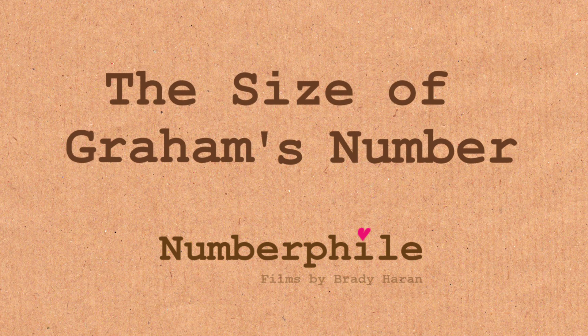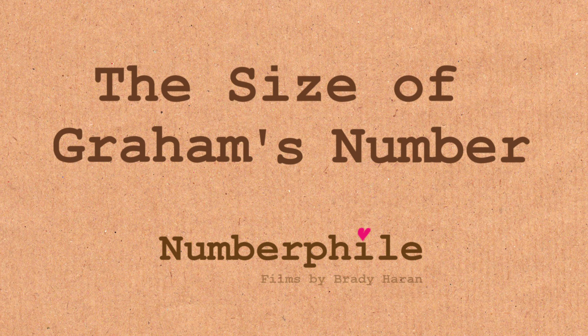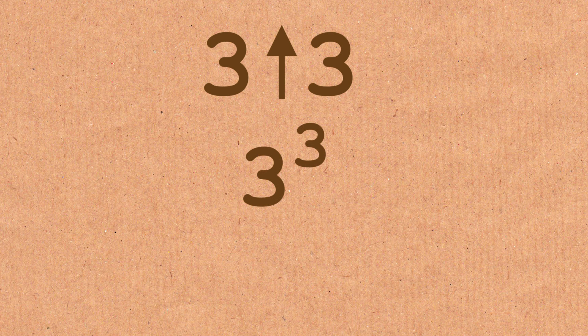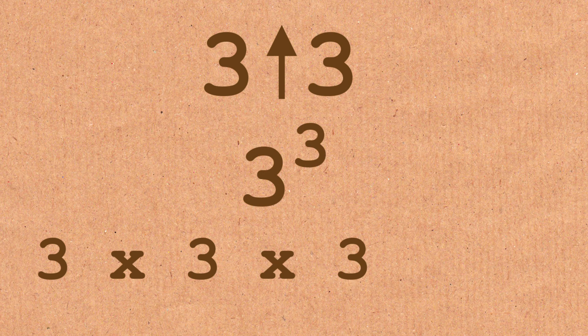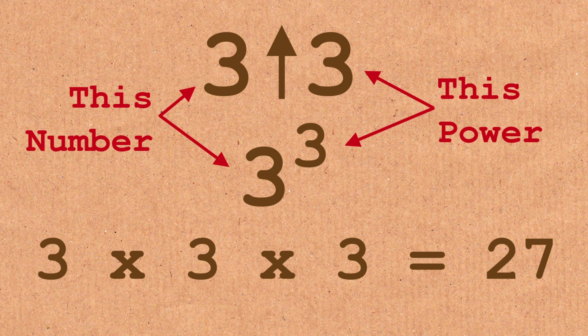Let's have another crack at how big Graham's number is. Let's start with 3 arrow 3. This is just 3 to the power of 3, which is 27. The arrow means this number to this power. Simple enough.